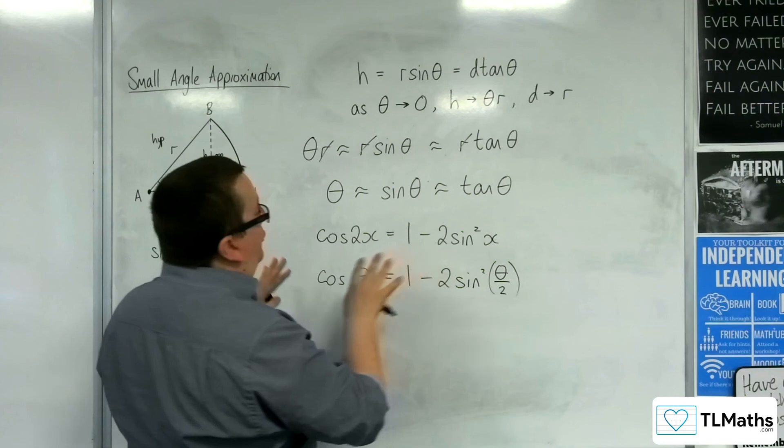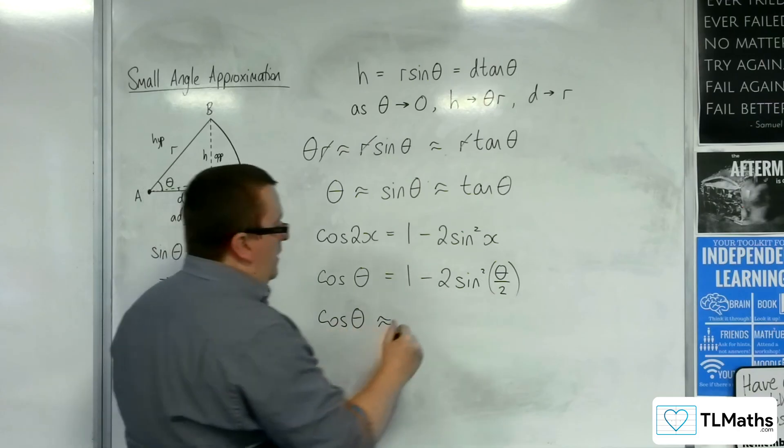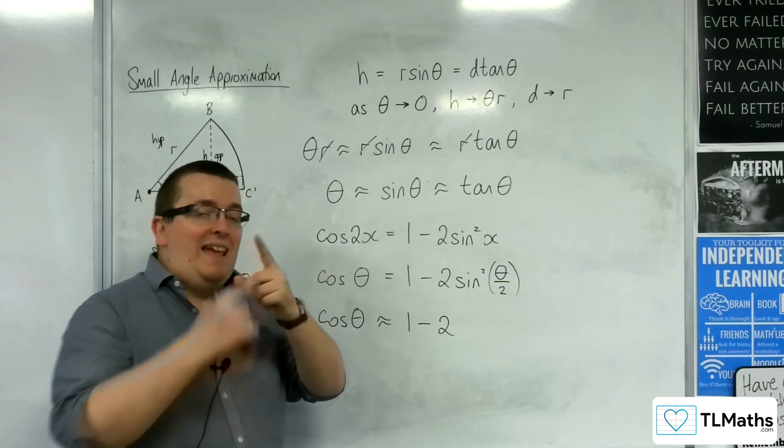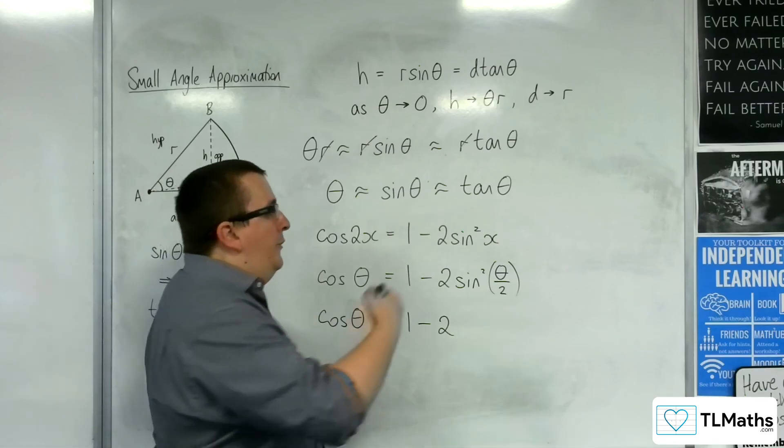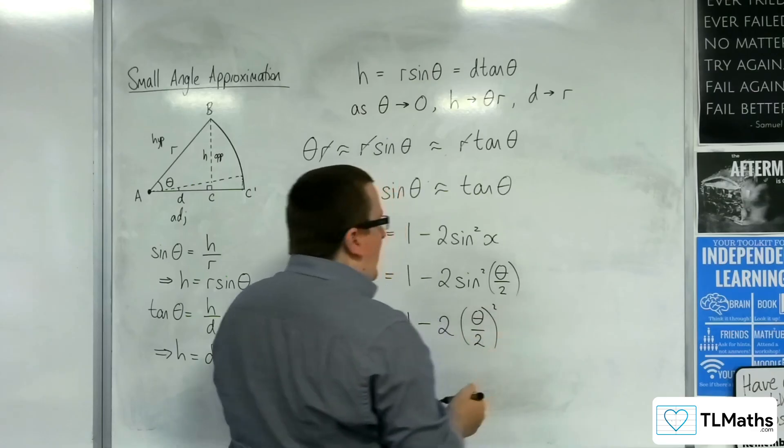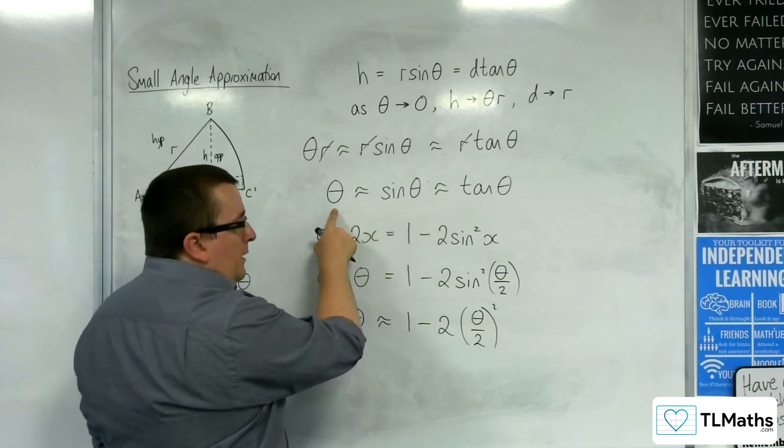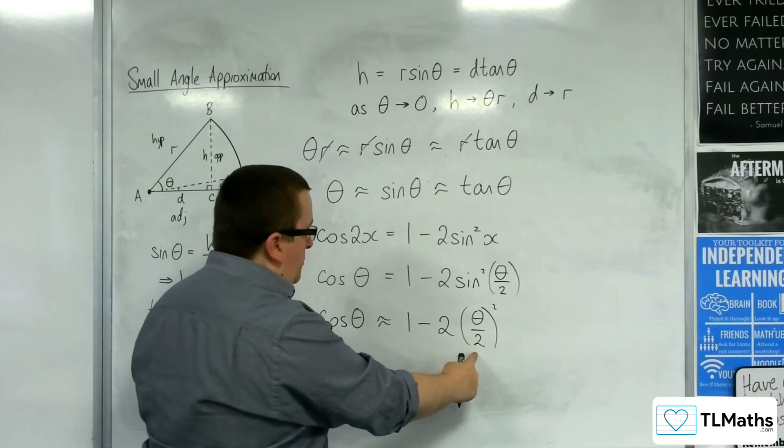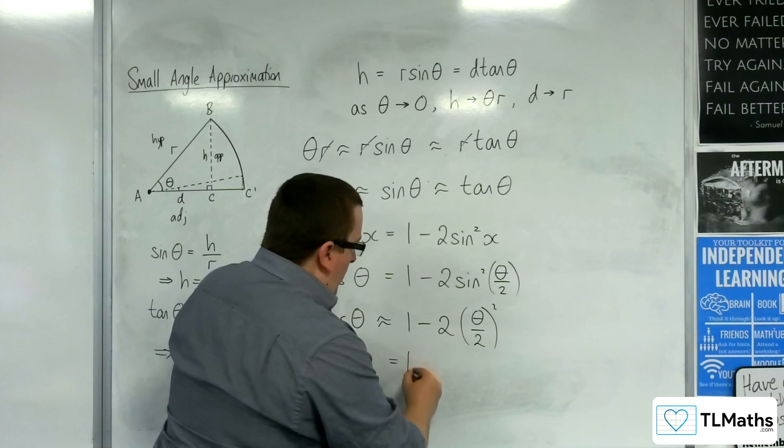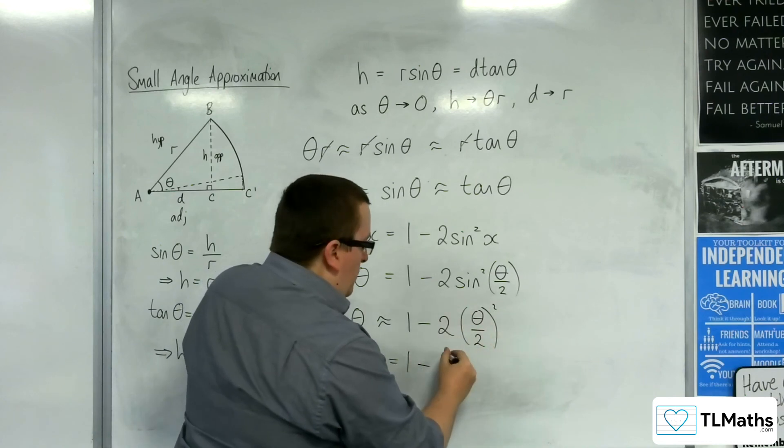Now if I'm saying that theta is small, then cosine theta will be approximately 1 take away 2 lots. Well I've got sine of theta over 2. When the angle is small, sine of theta over 2 will just be theta over 2. So it's that bit that's getting squared, because sine of theta is approximately theta, remember? So sine of theta over 2 will be approximately theta over 2. So if I simplify that, I get 1 take away, well I've got theta squared over 4 times 2, which is theta squared over 2.